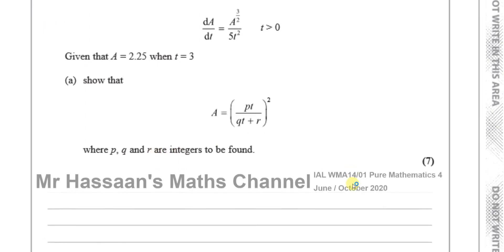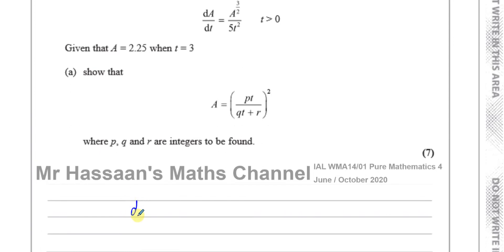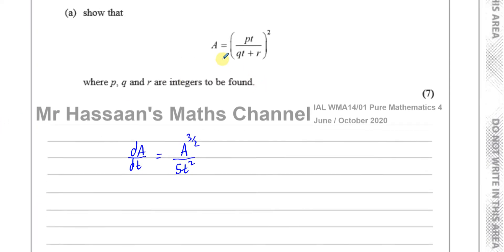So basically we have to solve this differential equation. We have to start with dA/dt and end up with A. It's called a differential equation because it has a derivative in it. So we have A to the power of 3/2 divided by 5t squared. What we have to do is solve for A — basically integrate both sides with respect to t to find what A is.